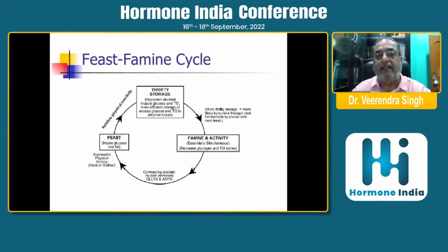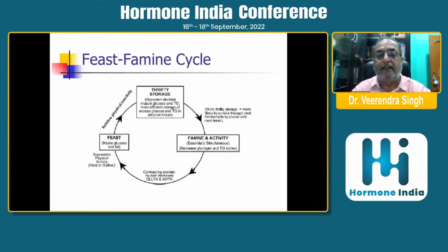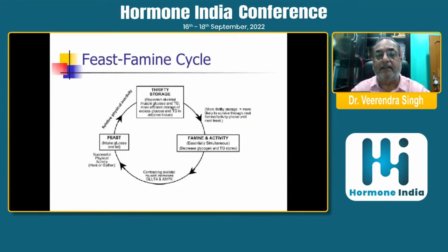During the famine and inactivity phase, hunters had to travel long distances to find food and fast for many days. There was essentially a decrease in glycogen and triglyceride stores. In periods of feast there was storage of food, and in periods of famine and inactivity, those stores were depleted.